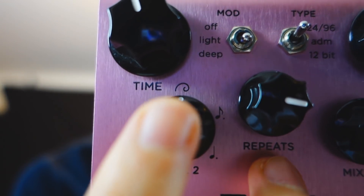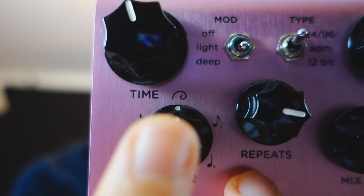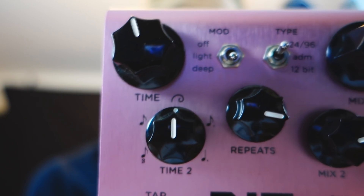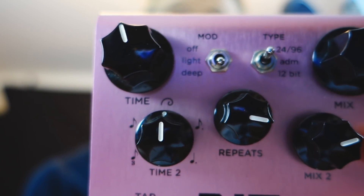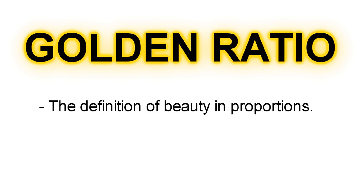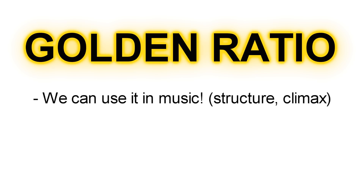I was really interested when I saw on the Strymon Dig the delay subdivisions and what is known as the golden ratio, so I wanted to learn more about it and how we can apply it to our other delay pedals. The simplest way to explain the golden ratio: it's the definition of beauty in proportions. It's used in architecture and paintings to get the most perfect proportions, but we can use it in music in many different ways too.